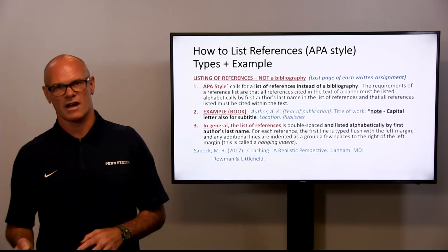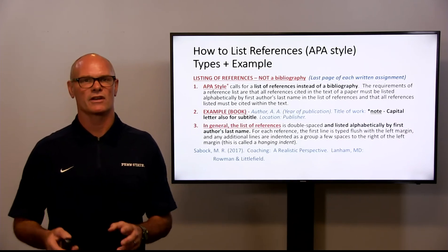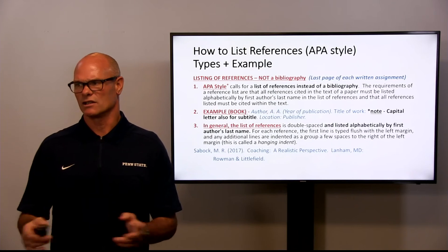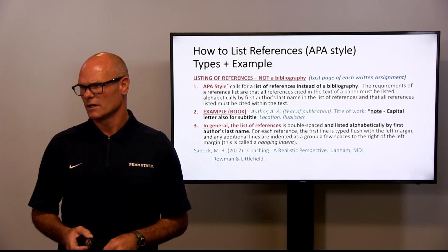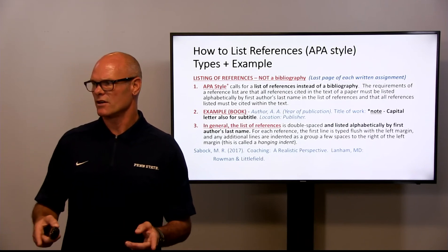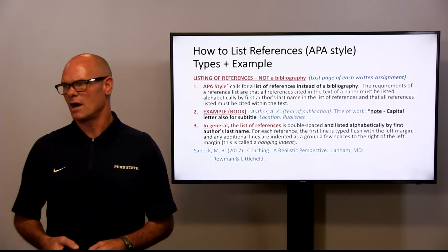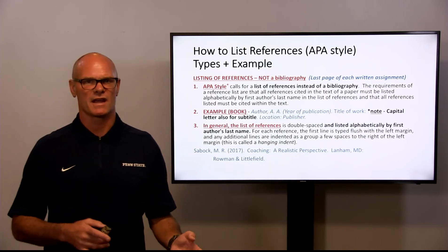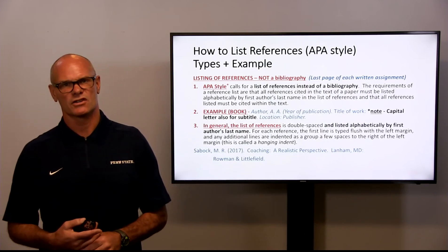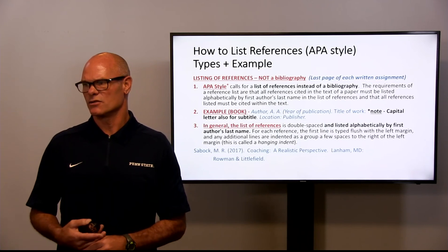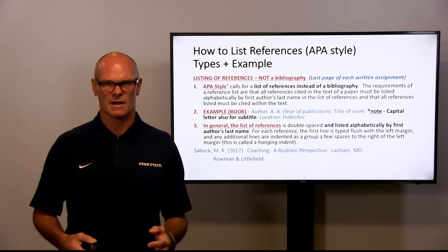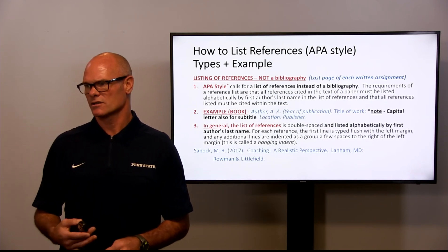For the listing of references, APA style requires a reference list rather than a bibliography. The very last page of each written assignment should have 'References' as the header — do not title it 'Bibliography.' You list entries alphabetically by the first author's last name if there are multiple authors. You put the author's last name and initials of all authors, then the year of publication in parentheses, followed by the title of the work. Note that subtitles also need to be capitalized.